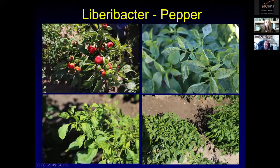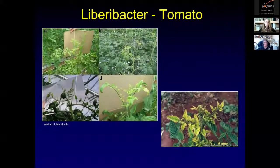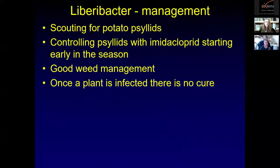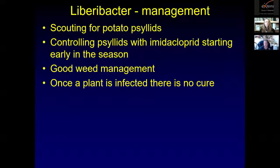Sometimes this can also be caused by curly top, a viral disease, so again you would have to get identification done through a diagnostic lab. On tomatoes it looks very similar to a nutrient deficiency — you get yellow leaves that have just green veins. I've not seen any symptoms on tomato fruit. To manage Liberibacter, you have to scout for and manage potato psyllids with insecticide sprays. Good weed management can help control psyllid populations and remove overwintering hosts. Once a plant is infected there's no cure — you might as well remove it.